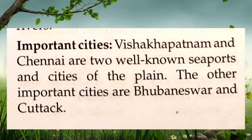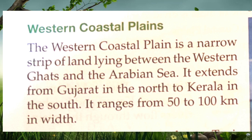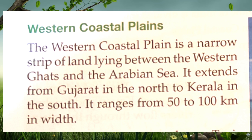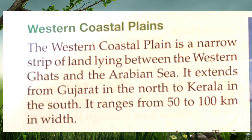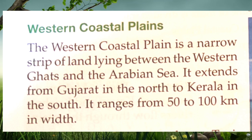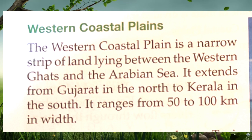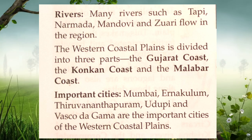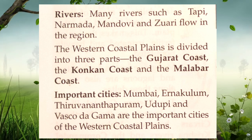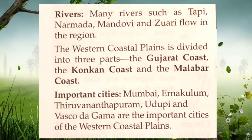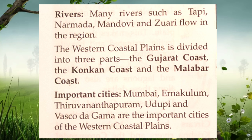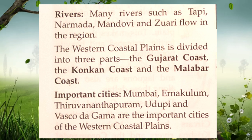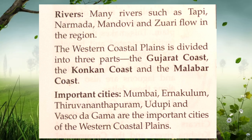Next, we are going to discuss about the Western coastal plains. It is the narrow strip of land lying between the Western Ghats and the Arabian Sea. It extends from Gujarat to Kerala, and ranges from 50 to 100 kilometers in width. The Western coastal plain is divided into three parts: Gujarat coast, Konkan coast and Malabar coast. The important cities of these coastal plains are Mumbai, Ernakulam, Thiruvananthapuram, Udupi and Vasco da Gama.